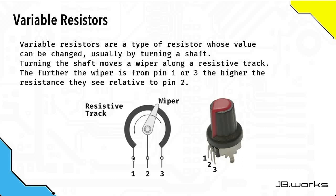Turning the wiper changes the relationship in terms of the amount of resistive material between either pins one and two or between two and three.